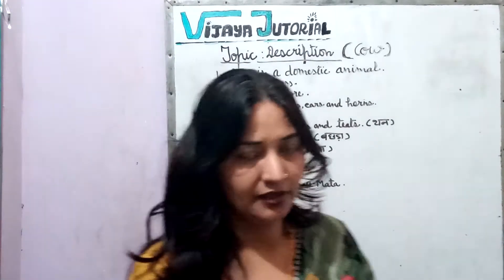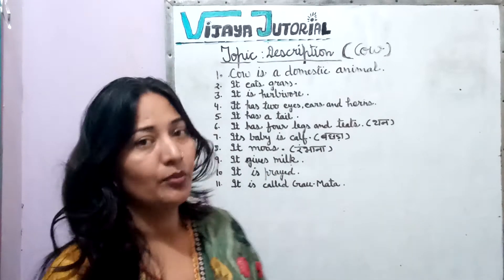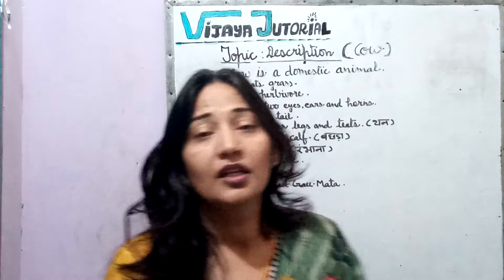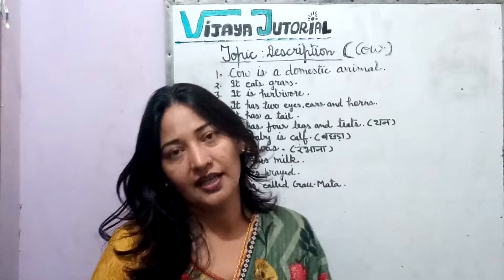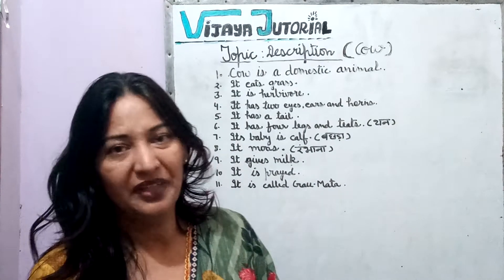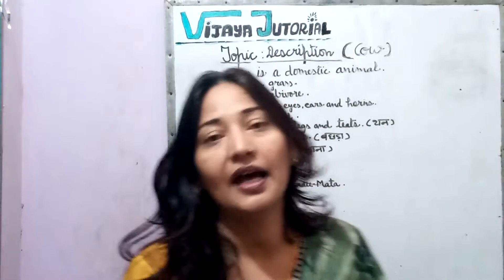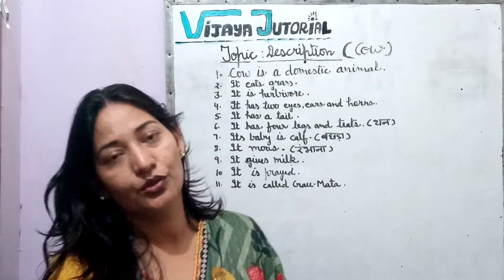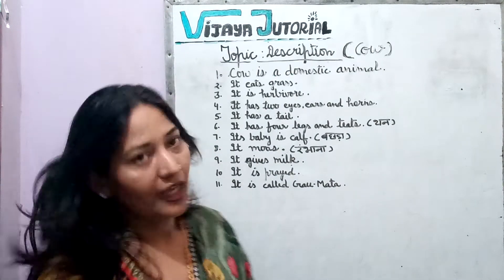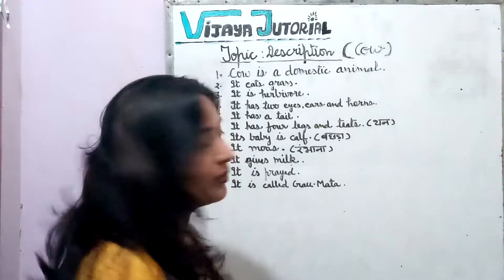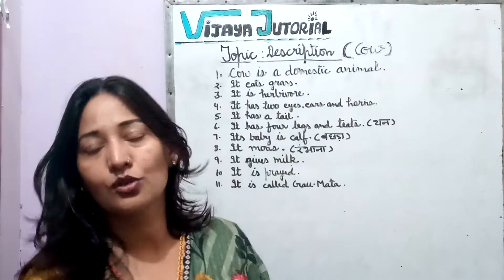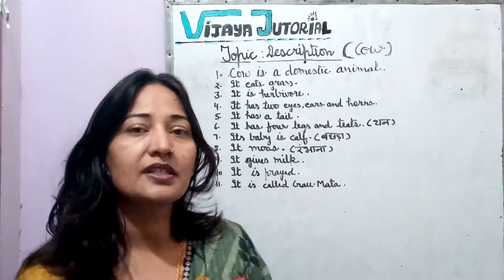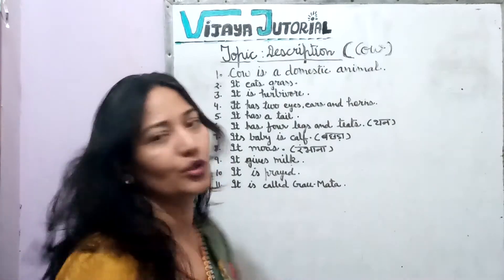Today I'm going to tell you about the cow. As I told you in an earlier video, whenever you do a description activity, you should make a wonderful picture of that particular item. After that, you can take sentences as per the class level — five sentences for KG class, ten for fifth class, and twelve or more for second class and above.